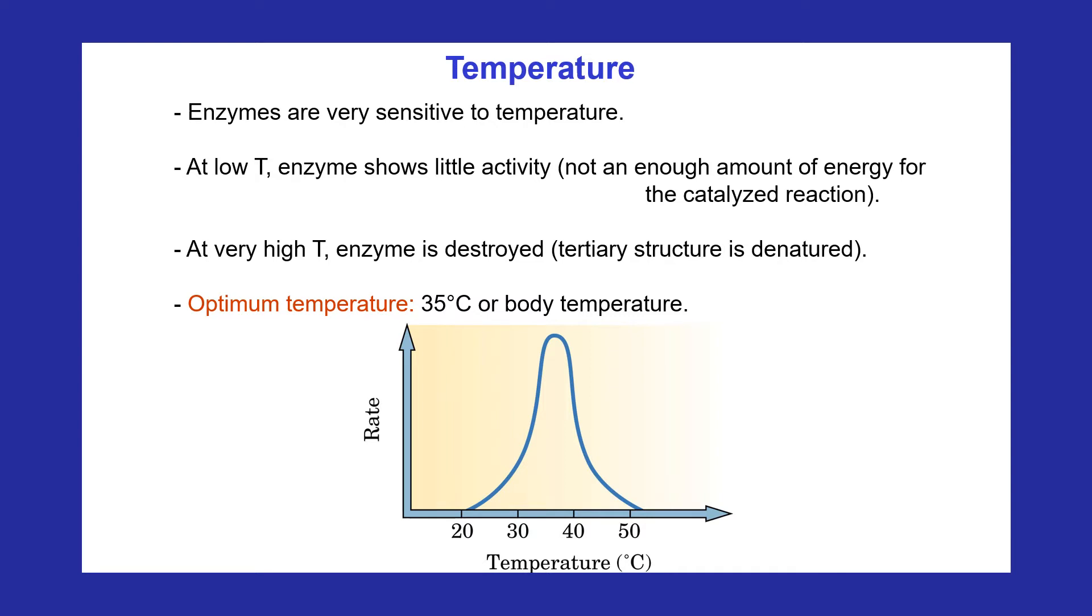At higher temperatures, enzyme activity increases as reacting molecules move faster to cause more collisions with enzymes. Enzymes are most active at optimum temperature which is 37 degrees Celsius or body temperature for most enzymes.